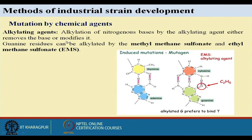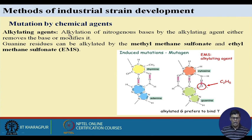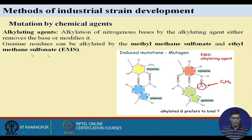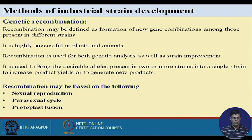Chemical mutagens are mainly used to change nitrogen bases. Alkylating agents cause alkylation of nitrogen bases, either removing or modifying the base. Examples include EMS (ethyl methane sulfonate) and methyl methane sulfonate, which are two alkylating agents used for mutation purposes to change the characteristics of the nitrogen bases that are part of the gene.